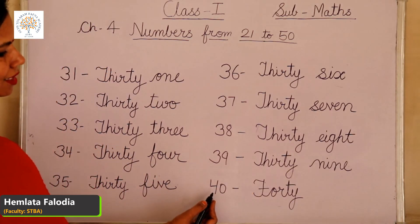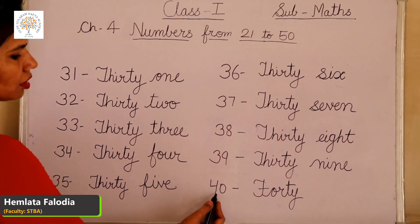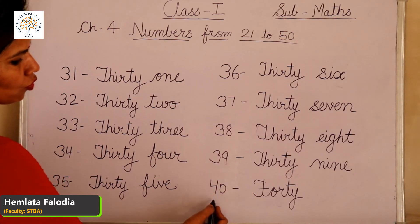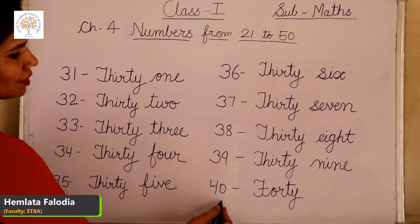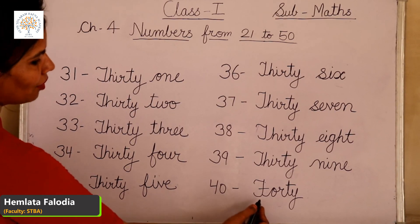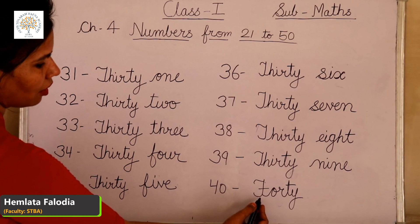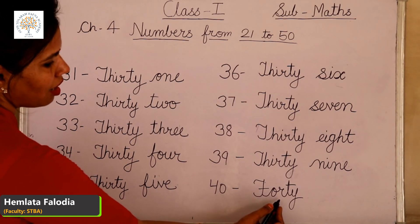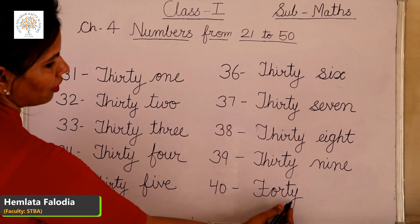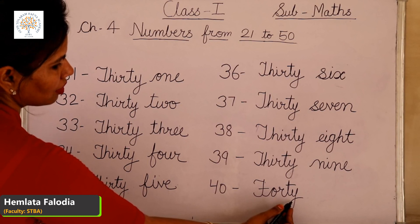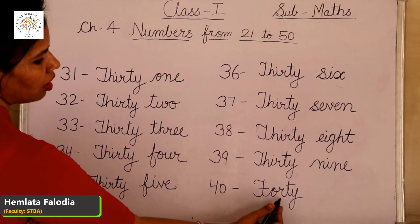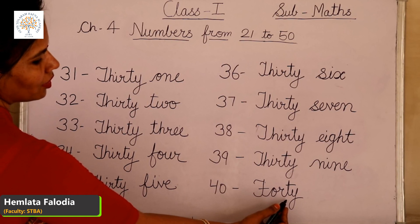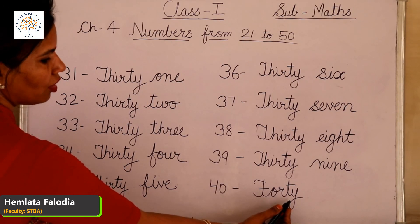Come to the next, which is 40. It means 4 times 10. This is the extended form of 40. The number name of 40 is F-O-R-T-Y. Again, repeat with me: F-O-R-T-Y, 40.